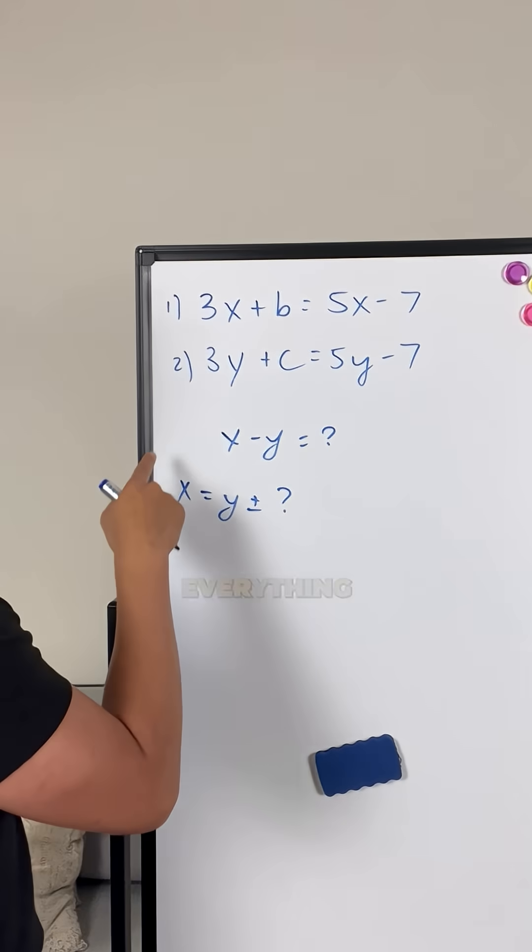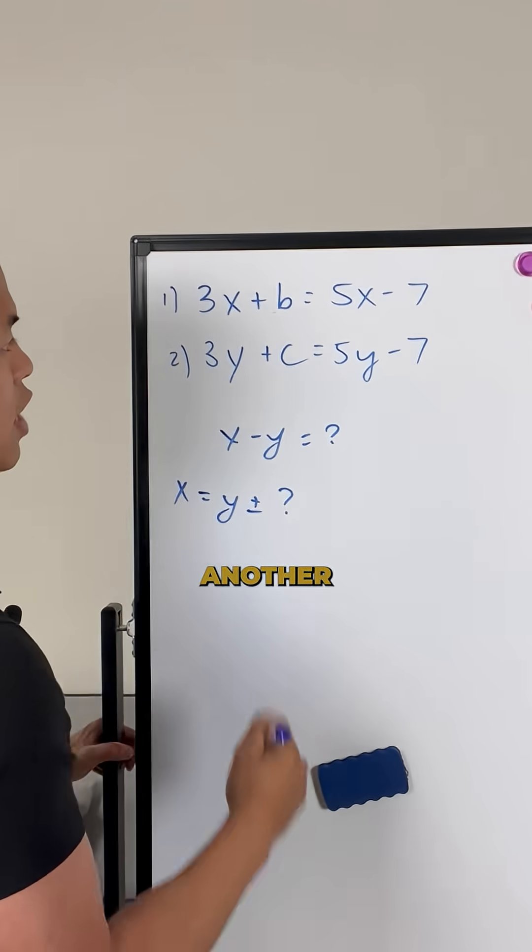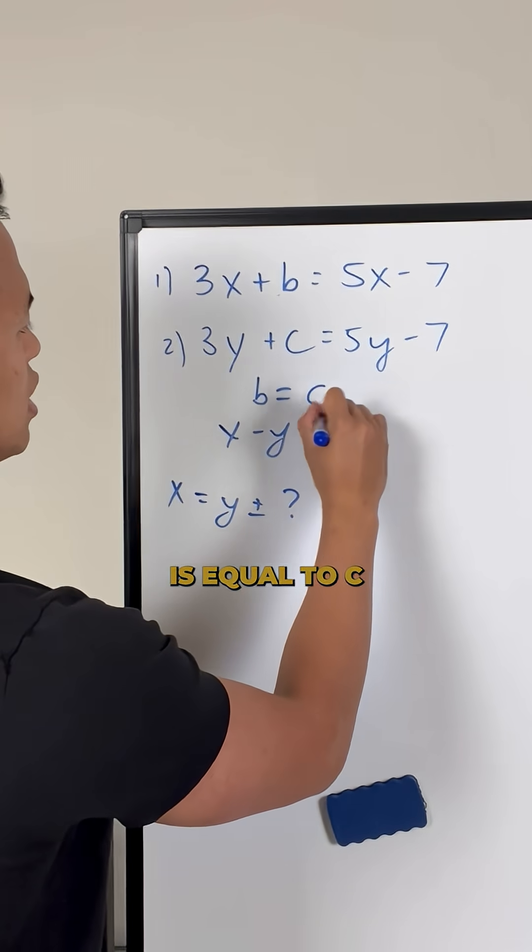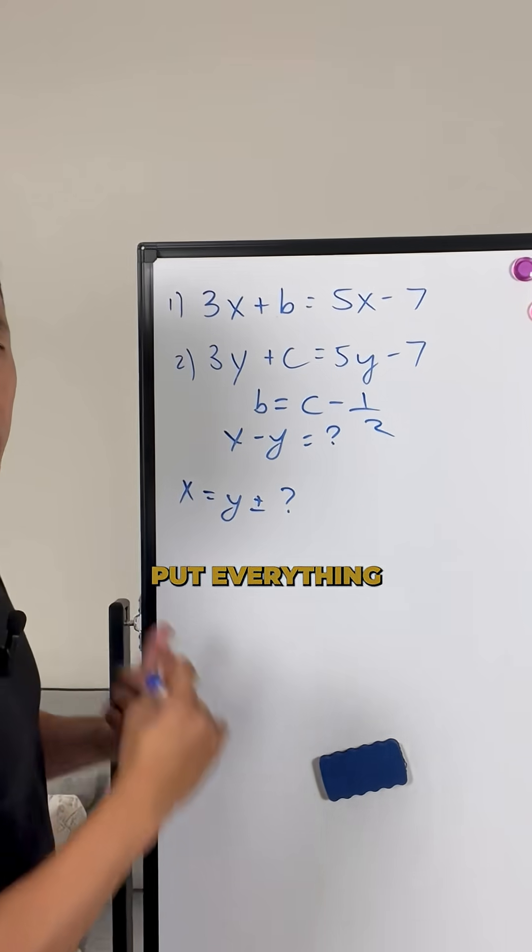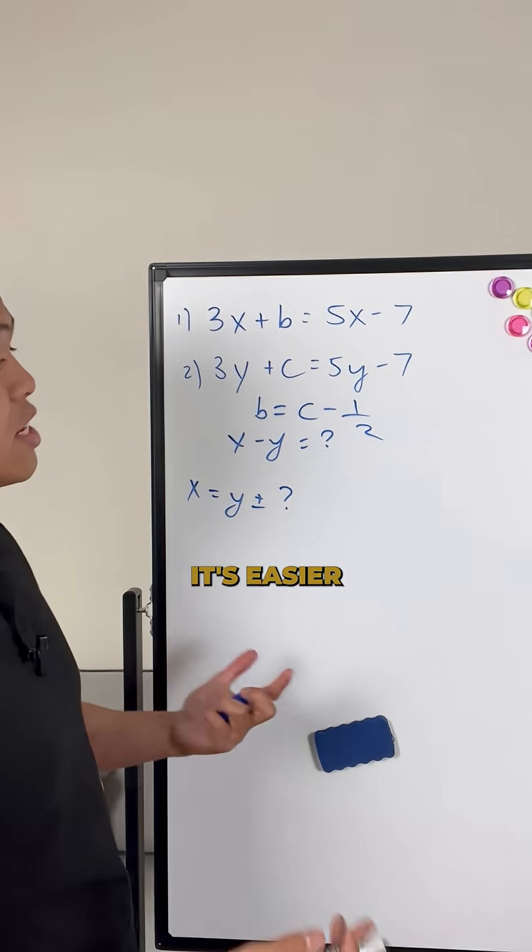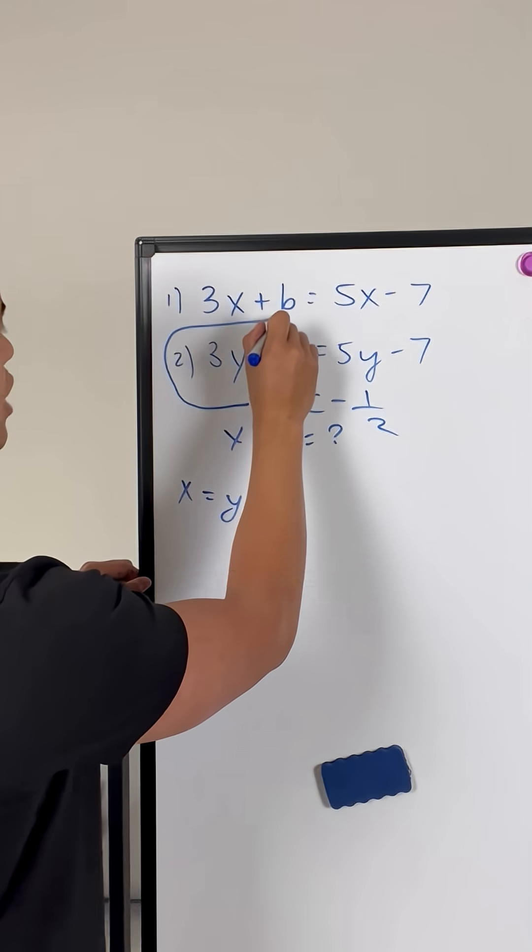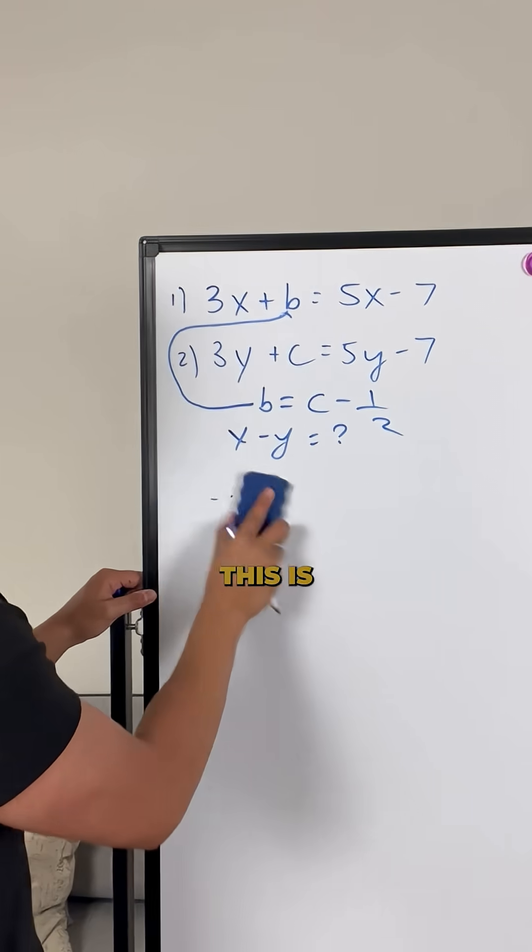Easiest way to do this is put everything in terms of one another, which means that if we have the relationship b is equal to c minus one half, what we want to do is put everything in terms of c just because it's easier. First things first is I'm going to plug in this relationship for b back into equation number one. And this is what we're going to get.